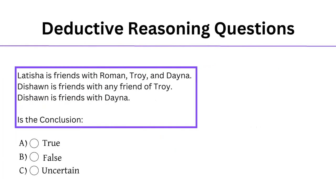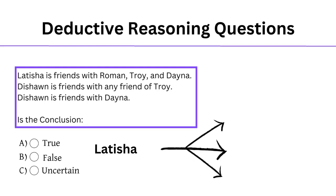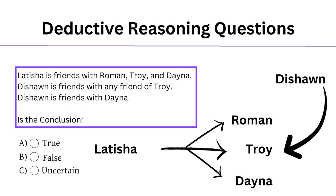Our final question is the same style — two statements and one conclusion. For our visual, we use arrows. Leticia is friends with Roman, Troy, and Dana. Deshawn is friends with any friend of Troy. And our conclusion is: Deshawn is friends with Dana. Looking at our visuals, we see a connection, but nothing explicit. We may be tempted to group these people as one big friend group, but that would be an assumption. It doesn't explicitly say Troy is friends with Dana — only that Leticia is friends with both of them.